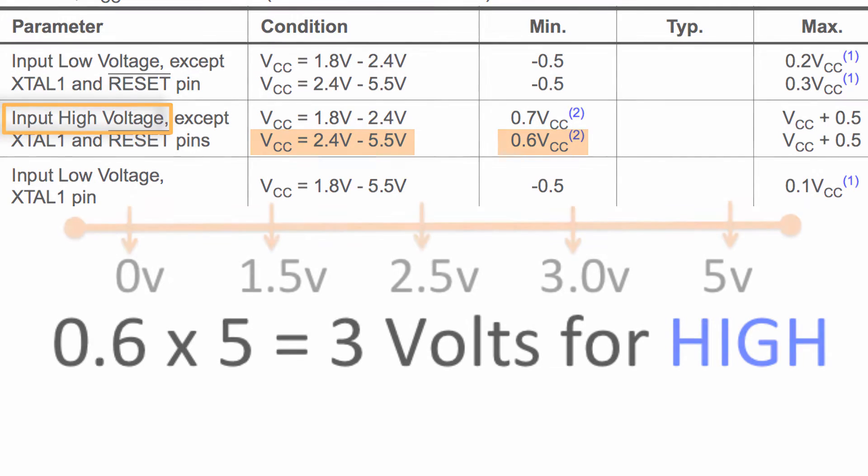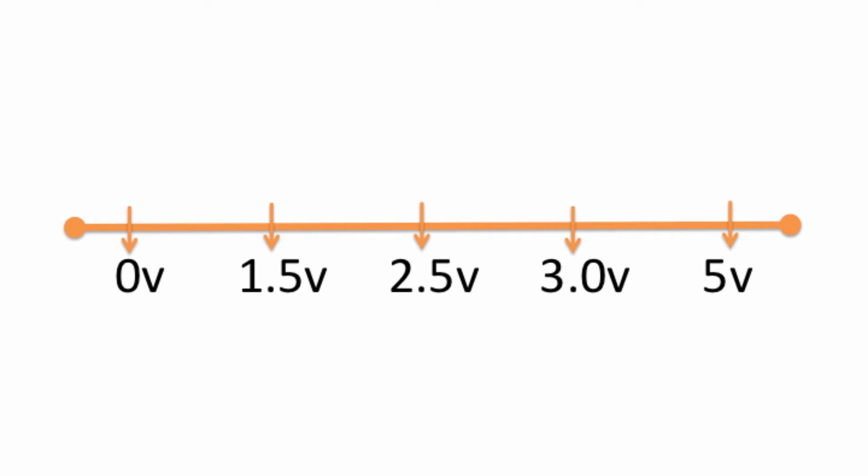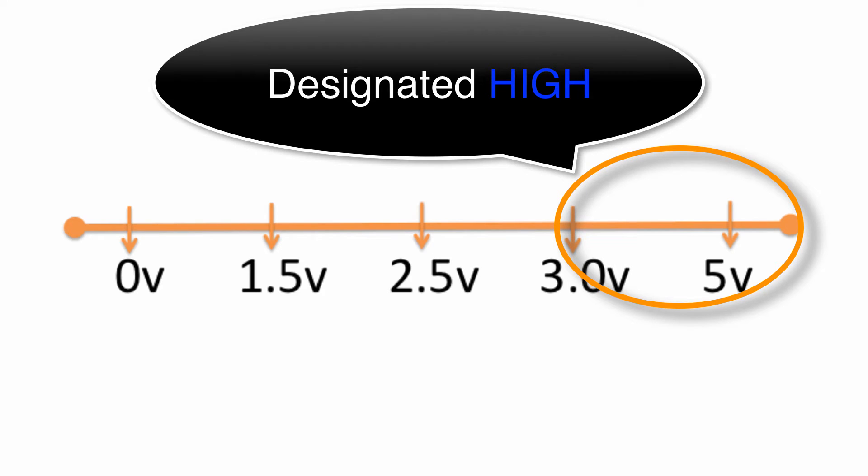If we apply 3.2 volts, 4 volts, 4.5 volts—you're not supposed to be applying more than 5 volts—all of that is considered a high. So we just draw a big circle on the scale from 3 volts up and we say all that stuff is high. There's our other abstraction.